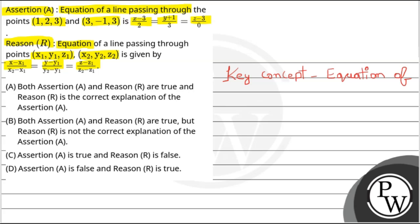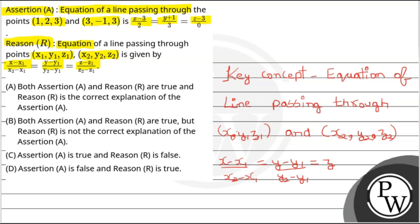The equation of a line passing through (x₁,y₁,z₁) and (x₂,y₂,z₂) is given by (x-x₁)/(x₂-x₁) = (y-y₁)/(y₂-y₁) = (z-z₁)/(z₂-z₁).